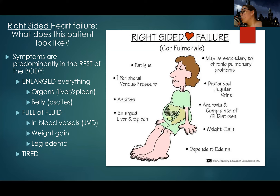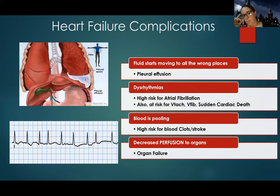Right-sided heart failure patients have predominant symptoms in the rest of the body. It backs up into the neck — jugular vein distension with tortuous thick veins in the neck — and into the abdomen, where the liver and spleen can be enlarged, or patients can have ascites (a pregnant-looking belly full of fluid). It can go all the way down into the legs with edema. Weight gain also occurs since these patients have fluid in more places throughout their body.